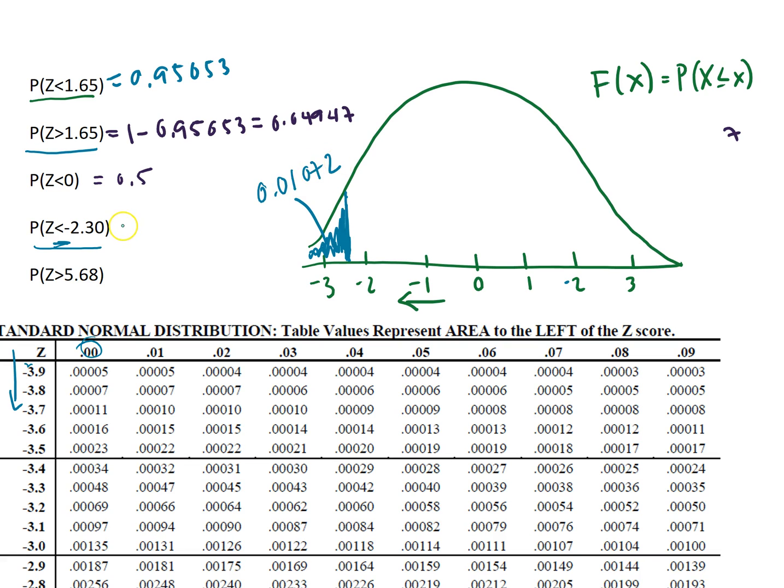So the area that falls below a z-score of negative 2.30 is then equal to 0.01072 from the standard normal table.